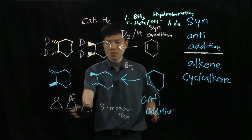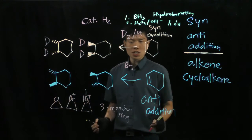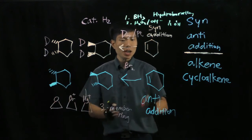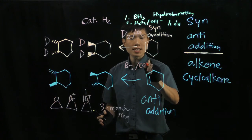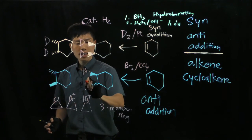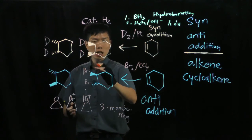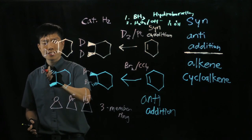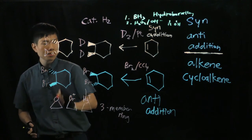So if I'm going to add BR2 in an inert solvent like CCL4, then we'll get BR and the BR incoming groups on the opposite side. So these are the products.